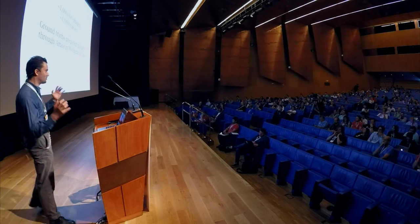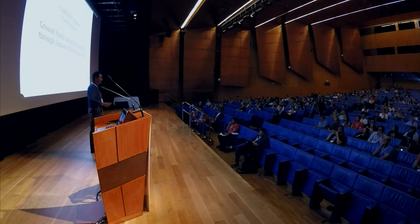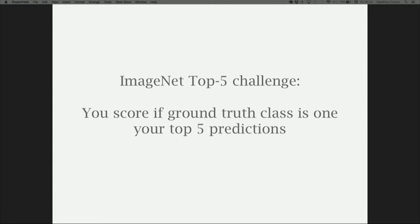The ground truths — a bunch of images scraped off Flickr — were prepared by getting people to label them over Amazon Mechanical Turk. The top-five challenge requires you to produce a classifier that, given an image, produces a probability score. You score a hit if the ground truth class is somewhere within your network's top five choices for what it thinks the image is.